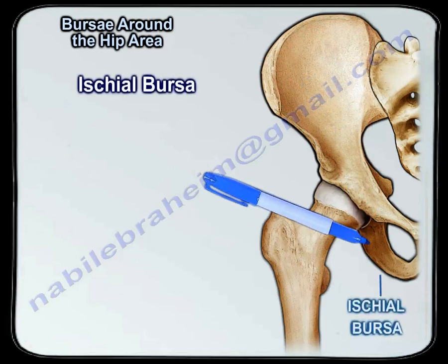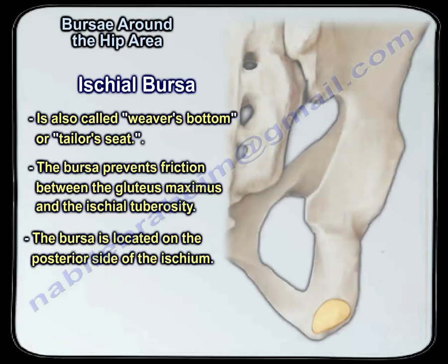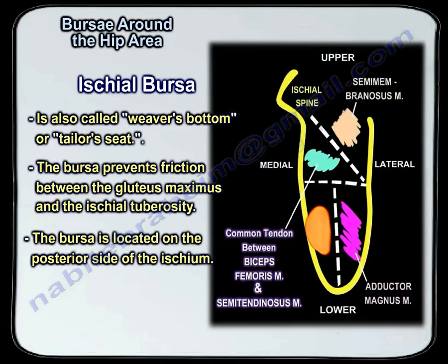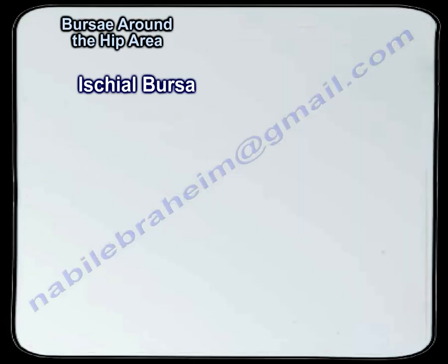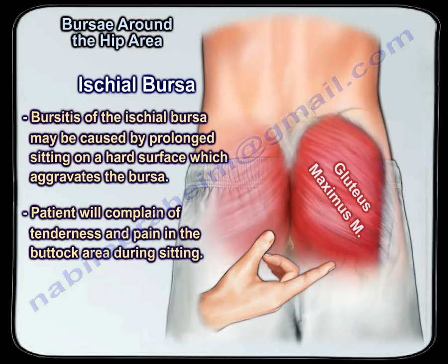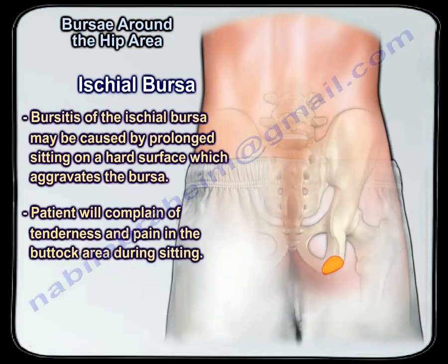The last bursa is the ischial bursa, also called weaver's bottom or tailor's seat. The bursa prevents friction between the gluteus maximus and the ischial tuberosity, and is located on the posterior side of the ischium. Bursitis of the ischial bursa may be caused by prolonged sitting on a hard surface, and the patient will complain of tenderness and pain in the buttock area during sitting.